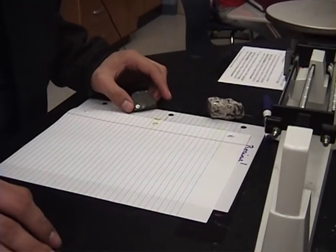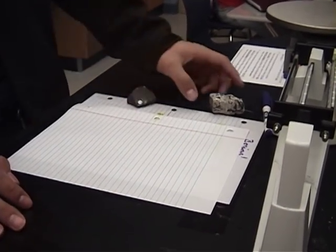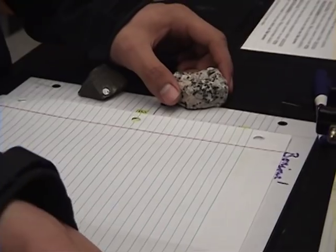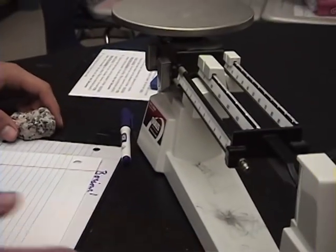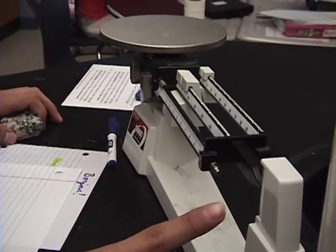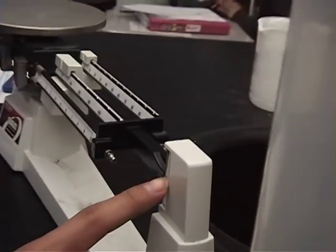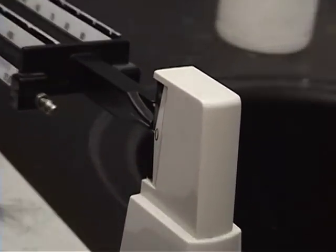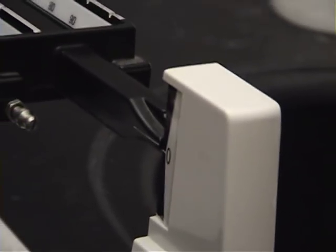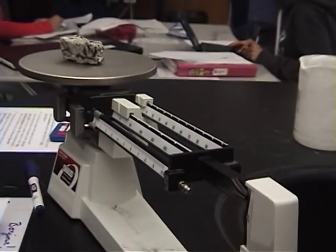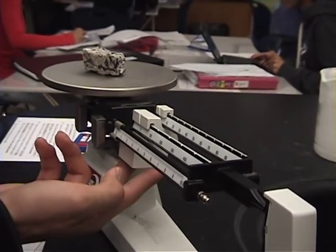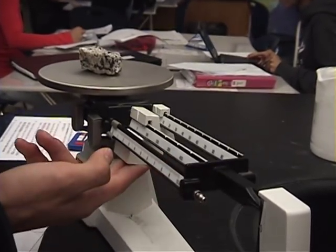So first we have to find the mass, which we have to use this triple beam balance right here. You have to make sure it's zeroed so that it's not too high or too low below the line. Let's go ahead and put the granite there, and then use this to figure out how much it weighs.